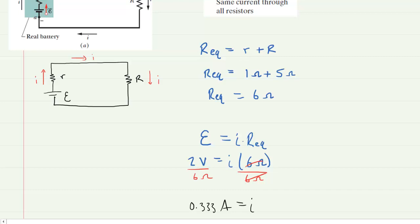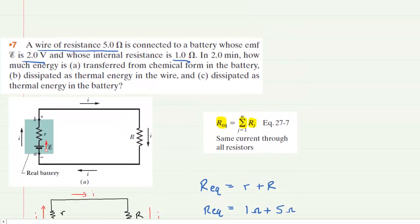And what we have to understand is that current is going to be traveling through both the internal resistance of the battery as well as the external resistance present in the wire. So keep that in mind as we solve the parts of the question.